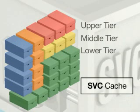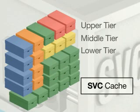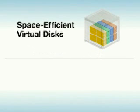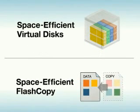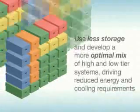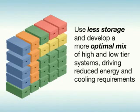If a storage unit reaches end of life, SVC allows data migration without interruption, making it easier to swap the older device for more energy-efficient storage. Innovative new functions such as space-efficient virtual disks and space-efficient flash copy can reduce the amount of storage used. Together, these capabilities help you use less storage and develop a more optimal mix of high and low tier systems, driving reduced energy and cooling requirements.